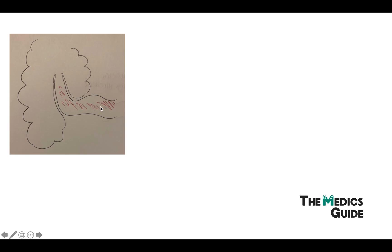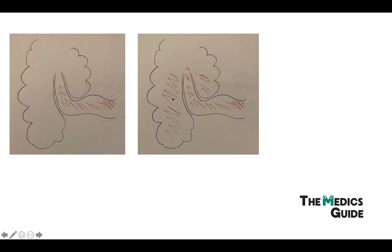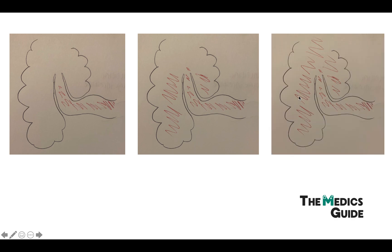With a barium enema, as barium flows through the bowel you can see it fills the proximal part first, then fills the pockets of space caused by the intussusception, helping you to see the full pattern of where the intussusception is taking place. Interestingly, the barium can also push back on the bowel and help straighten it out, so we call this both diagnostic and therapeutic.